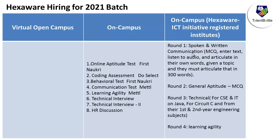For this ICT initiative pattern, the first round is spoken and written communication — MCQs and English communication activities. The second round is general aptitude (MCQ). The third round is technical: for CS/IT students, questions are from Java; for circuit branches, questions are from C and first and second year engineering subjects. Round four is learning agility. One online training company created a video claiming all other sources are wrong, causing confusion among students facing this on-campus initiative.